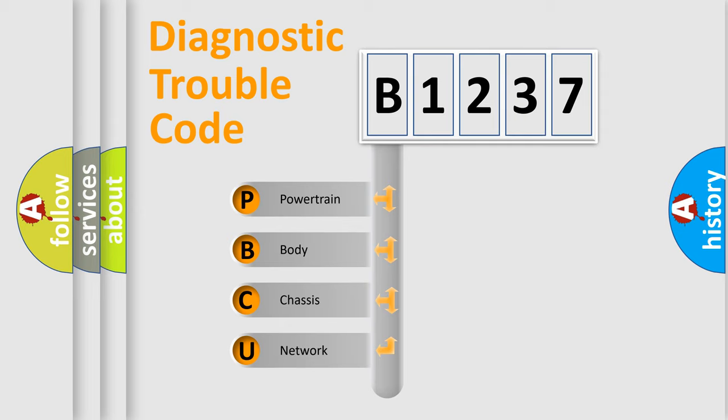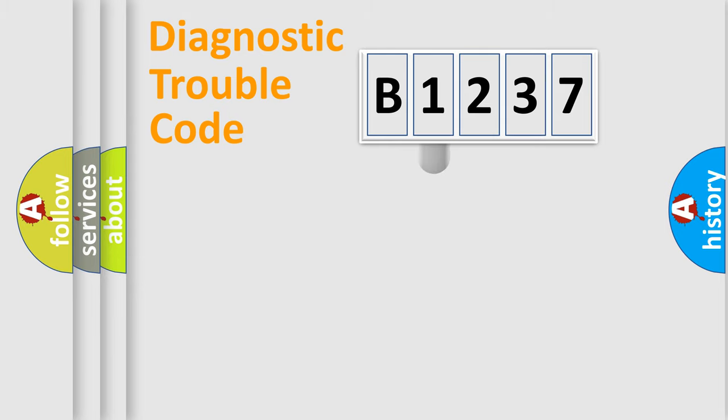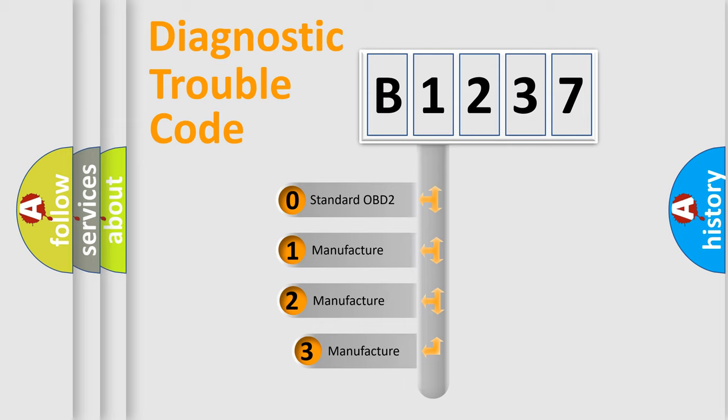We divide the electric system of automobile into four basic units: Powertrain, Body, Chassis, and Network. This distribution is defined in the first character code.